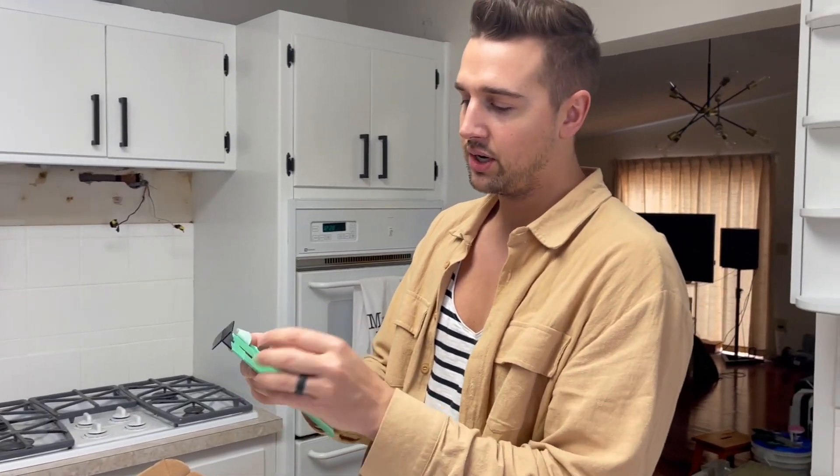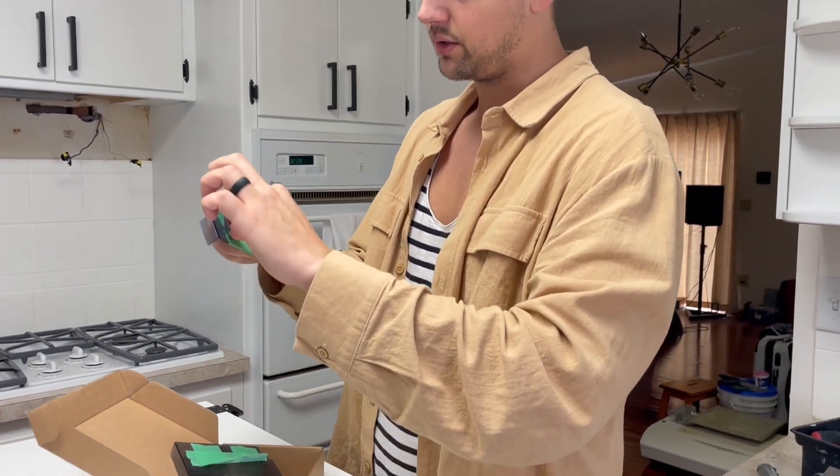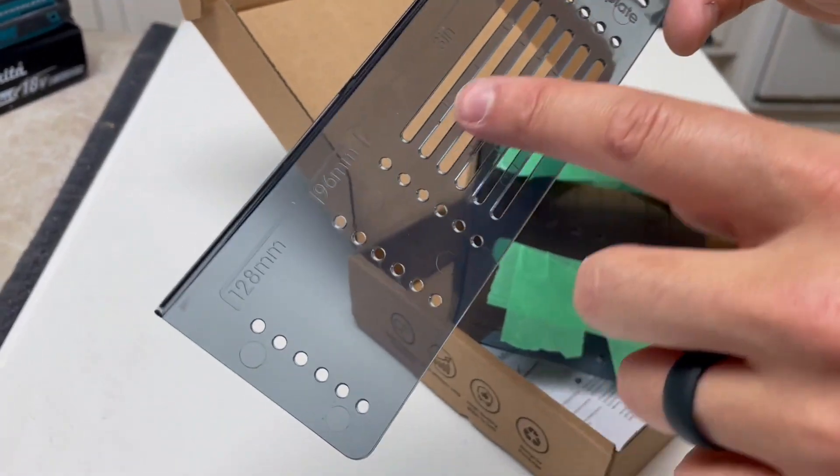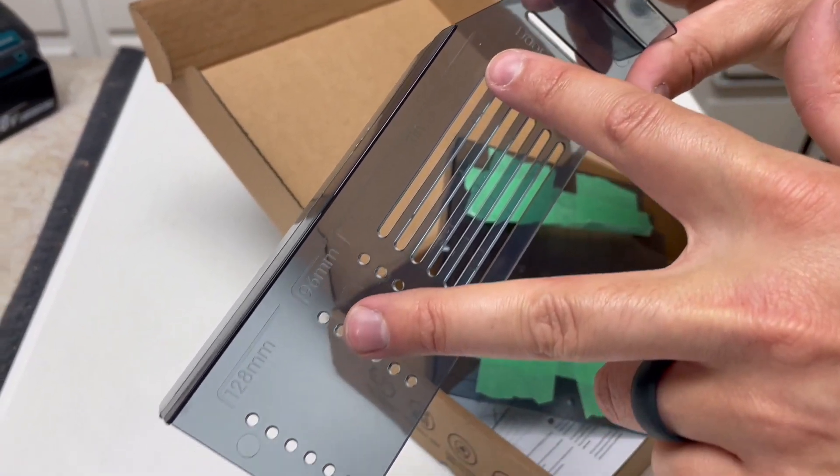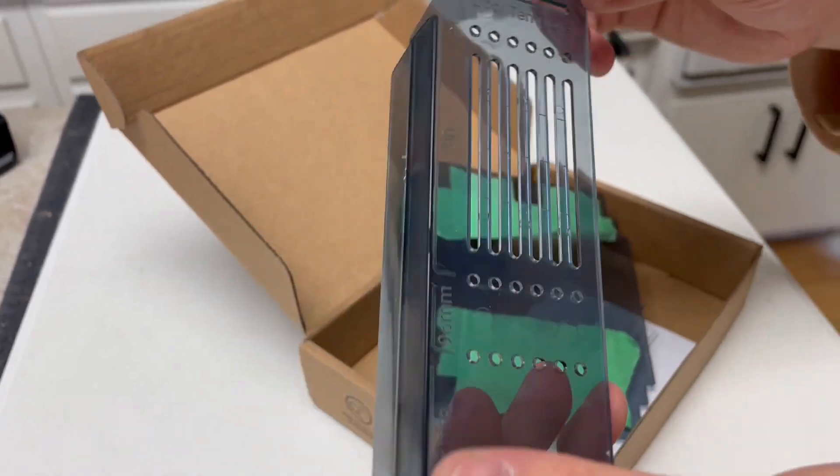I'm using the 5 inch for this, but I'll show you what it looks like under all this tape. So here are our different measurements on the front - they've got the 3 inch, 96 millimeters, 128 millimeters, and so on.